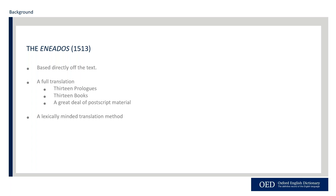By 'full,' I mean it translates the entirety of the Aeneid, unlike the later translator Henry Howard, Earl of Surrey, who only translated books two and four. This translation is also groundbreaking in its thoroughness: not only does it translate all 12 books of the Aeneid, but it adds a 13th translated from The Supplement by the Italian poet Maffeo Vegio. The Supplement essentially brings everything together and gives the Aeneid — which ends on a very jarring note — a happy ending.